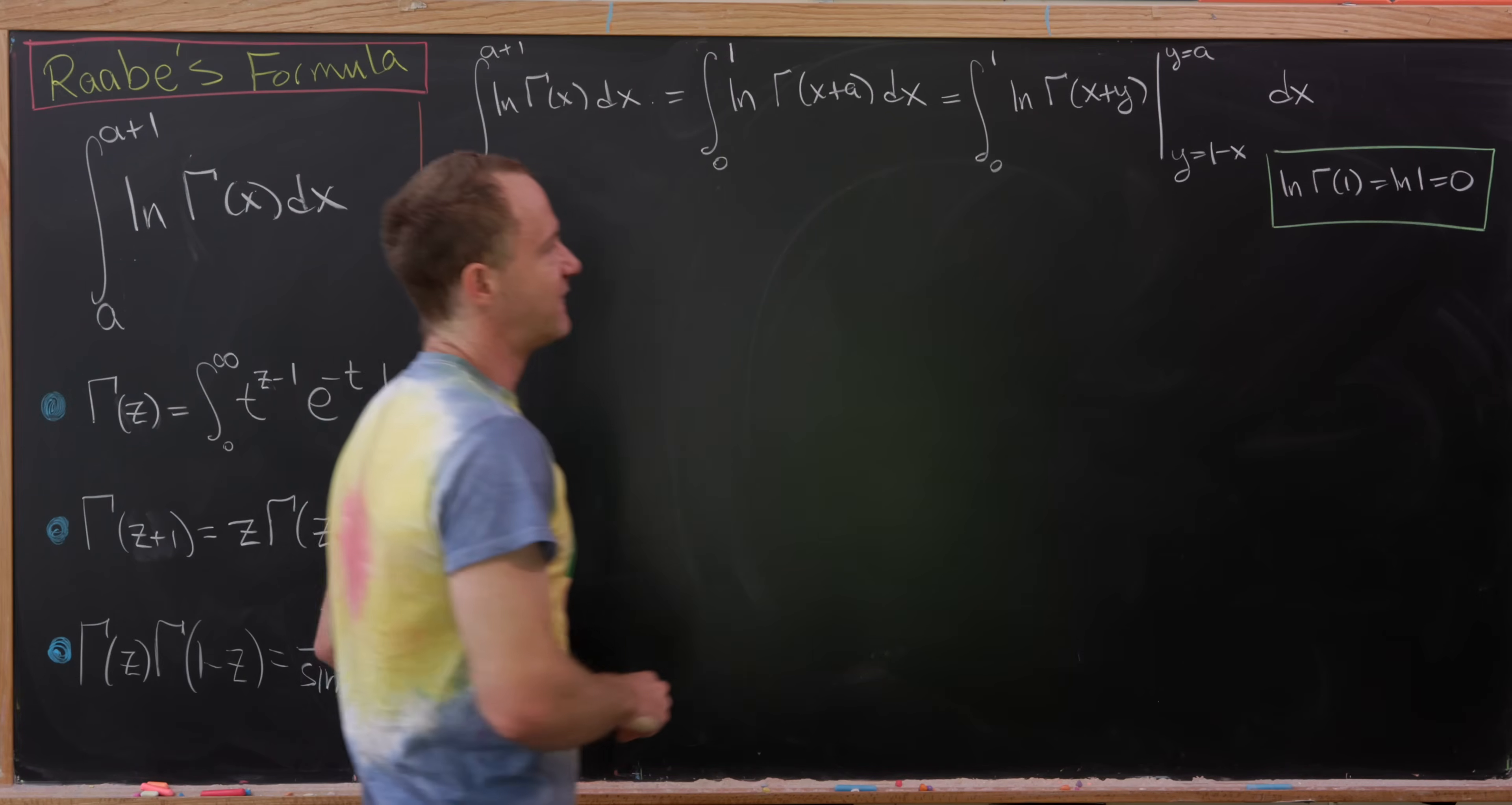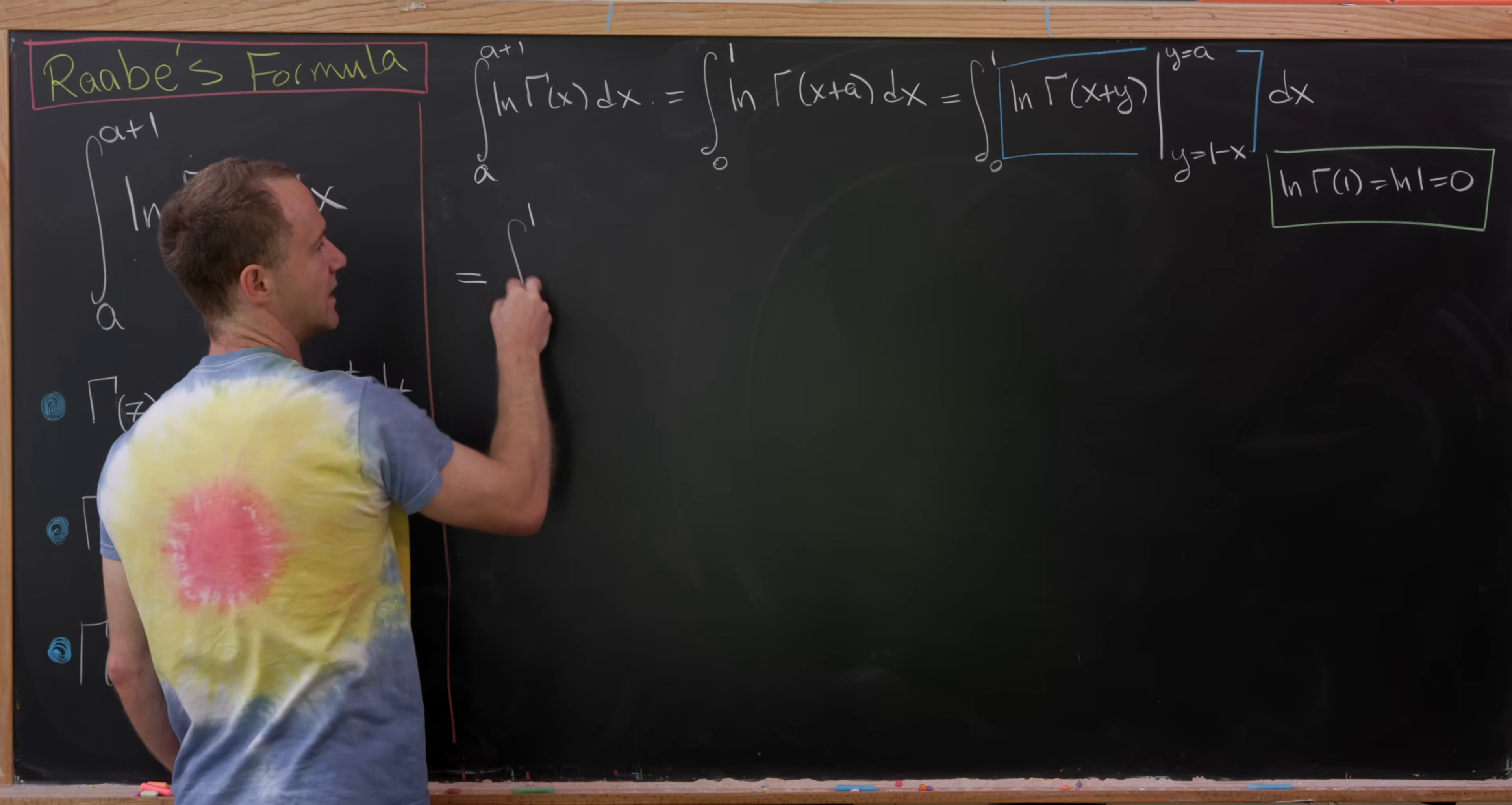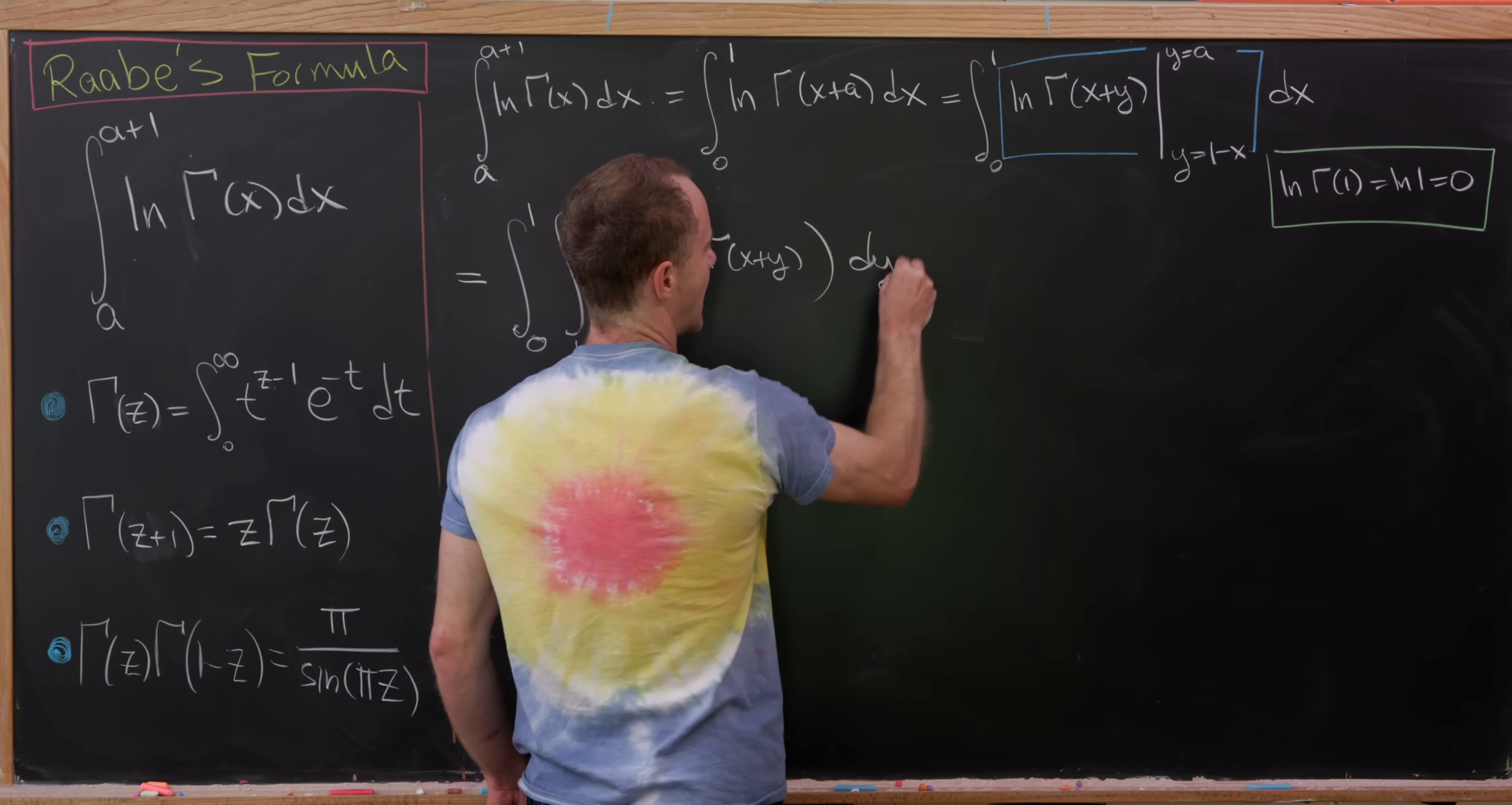But now look at this. We've got a function evaluated between two points. And like I said before, I like to think about this as a zeroth integral. So I can take the derivative with respect to y and apply the fundamental theorem of calculus, changing that zeroth integral to a first integral. So here we'll have the integral from 0 to 1, and then the integral from 1 minus x up to a of the partial with respect to y of the log of gamma of x plus y, and then dy dx.